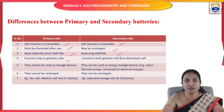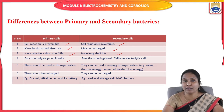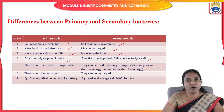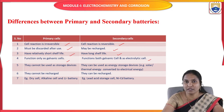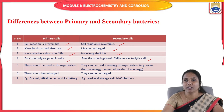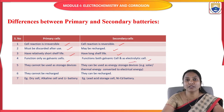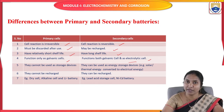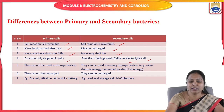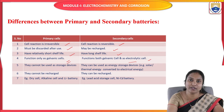Primary batteries have a relatively short shelf life since they cannot be recharged. Secondary batteries have a long shelf life. Primary batteries function only as galvanic cells — also called voltaic or electrochemical cells — which convert chemical energy into electrical energy. Secondary batteries function as both galvanic cells and electrolytic cells; an electrolytic cell converts electrical energy into chemical energy.